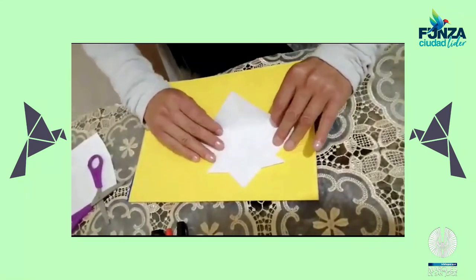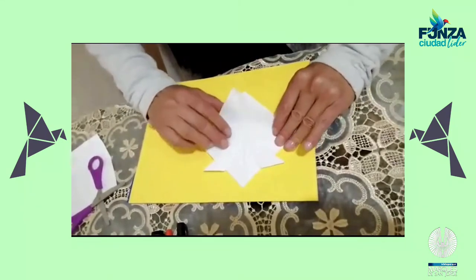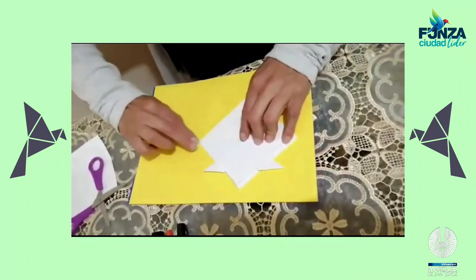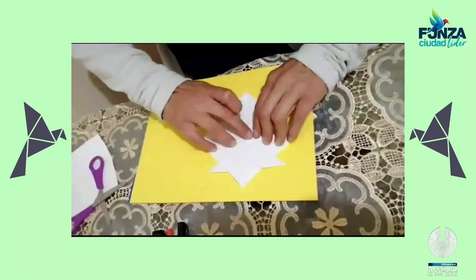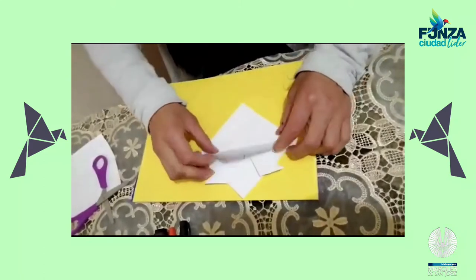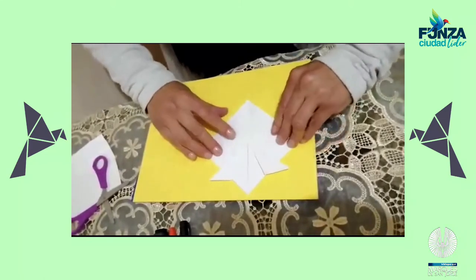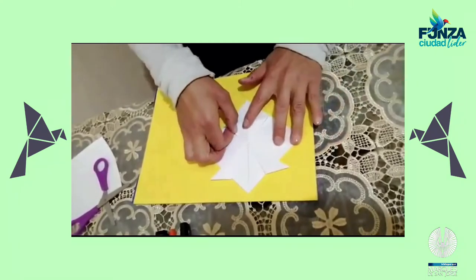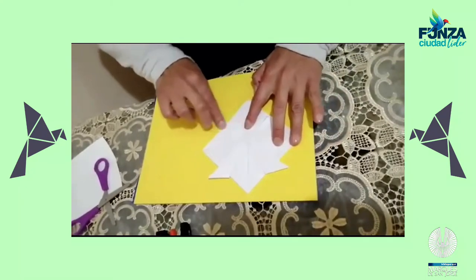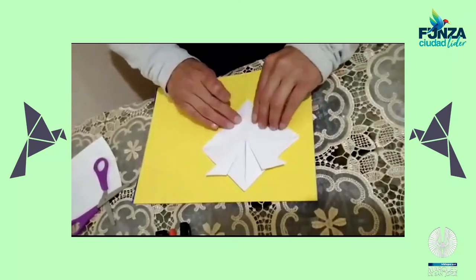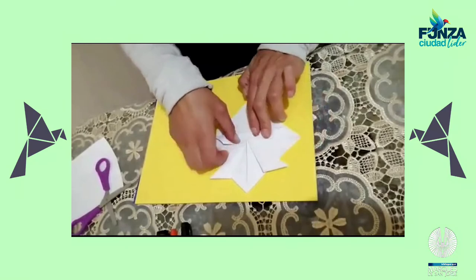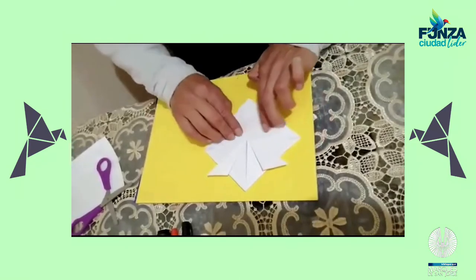Vamos a tomar el triángulo que está hacia abajo y lo vamos a llevar hacia arriba. Igual, repasamos el centro. Bajamos. Vamos a tomar la mitad y la vamos a llevar hacia el centro. Volvemos y repasamos. Volvemos y doblamos por la mitad y lo llevamos al centro. Volvemos y repasamos.